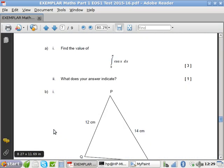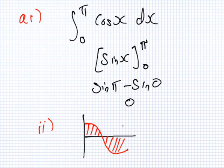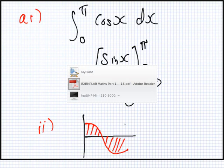What does your answer indicate? Well, if you graph cos x, what this zero means is that the area here is the same as the area here. Now, I think that's a very, very stupid question. It is though, it is stupid.